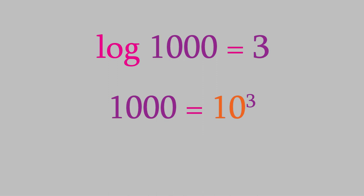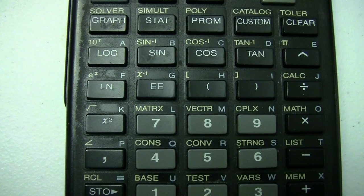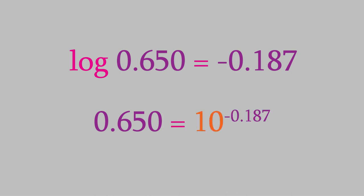Most of the time, though, it's not possible to calculate a logarithm in your head. Luckily, your calculator has a button for it, just like the natural log button. So, for example, the logarithm of 0.650 is negative 0.187. Remember, that means that 0.650 is equal to 10 raised to the power negative 0.187. Anyway, back to the pH.